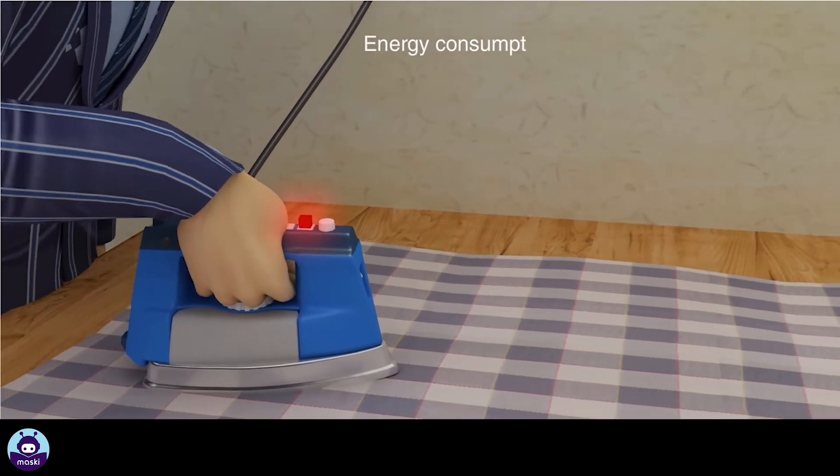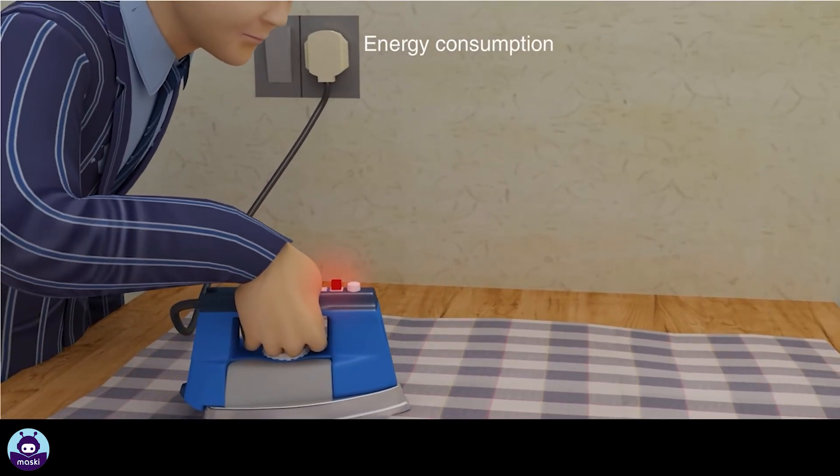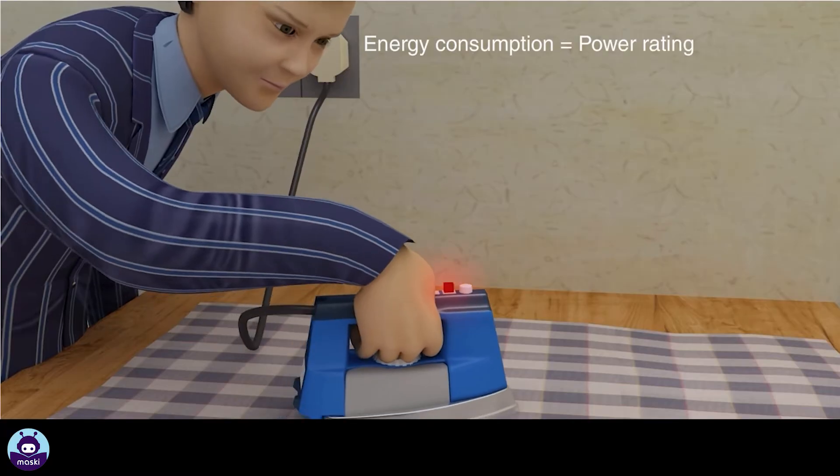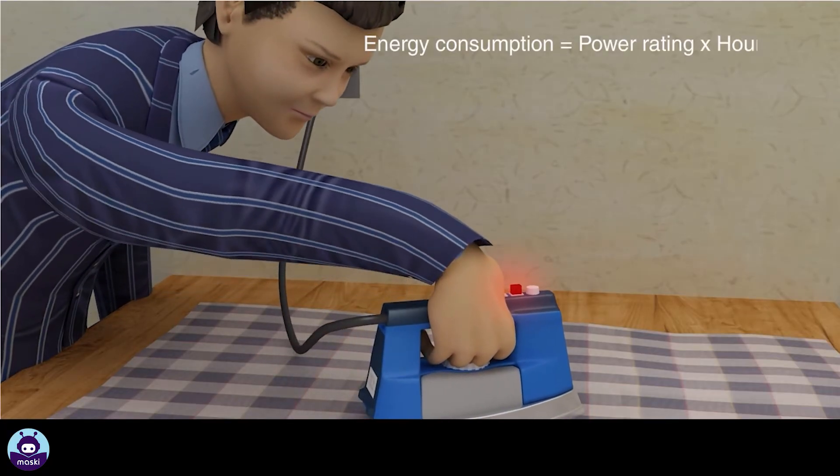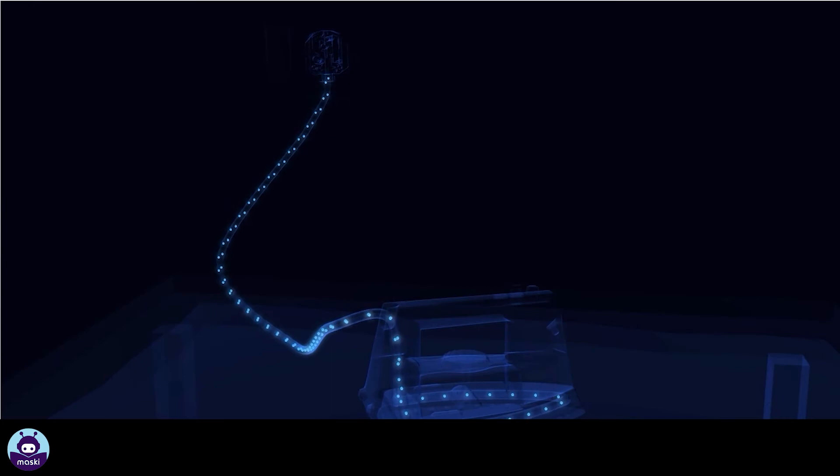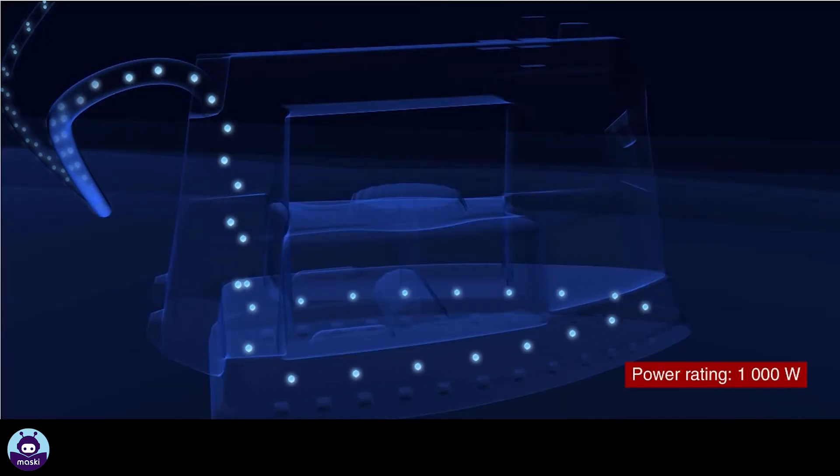The energy consumption of an appliance is calculated by multiplying the power rating of the appliance by the number of hours that it was used. If this electric iron is used for one hour, it will consume one kilowatt hour of energy.